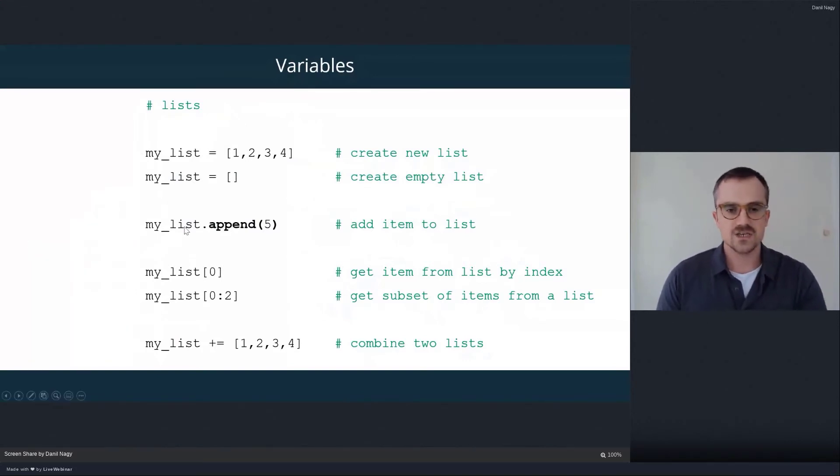So a list is just a container of several pieces of data ordered in a sequence. And so we can create one list here. We're creating a variable called my_list. And we're assigning to it this list that we're specifying with square brackets. So lists are always created with square brackets.